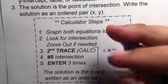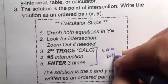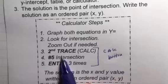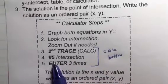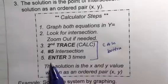Once you put them in, these are the buttons that you'll push. You press 2nd, trace. We want the intersection, so we'll go to 5. And then we're going to enter 3 times.